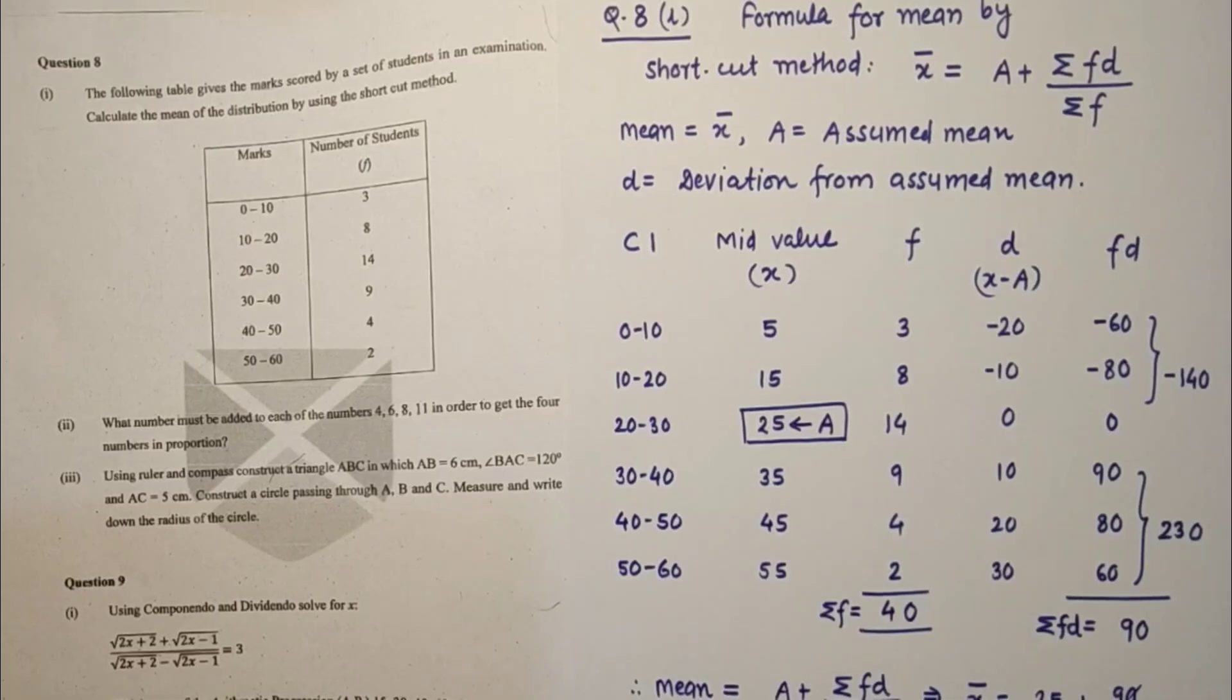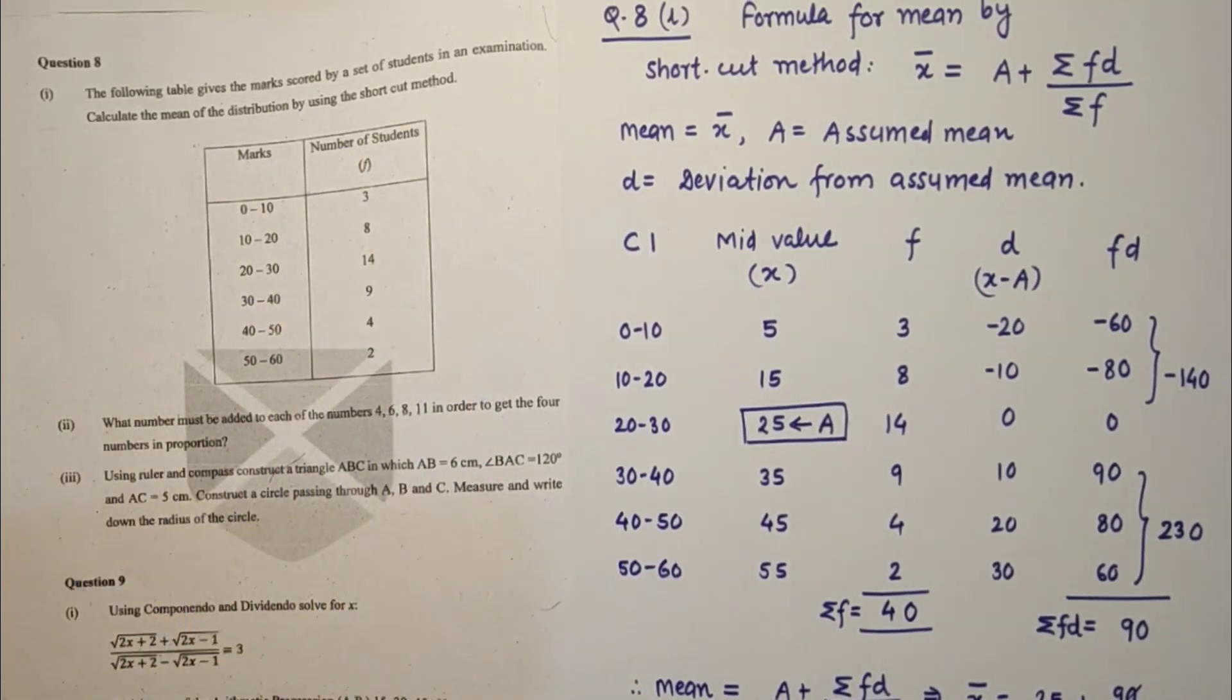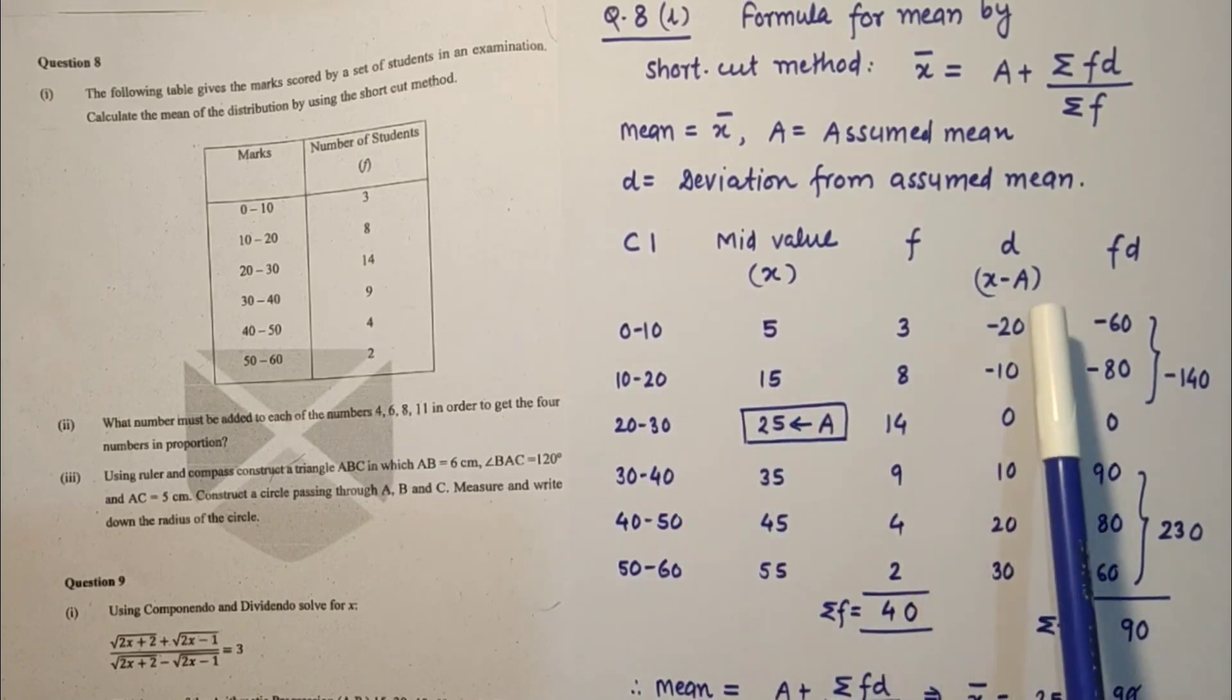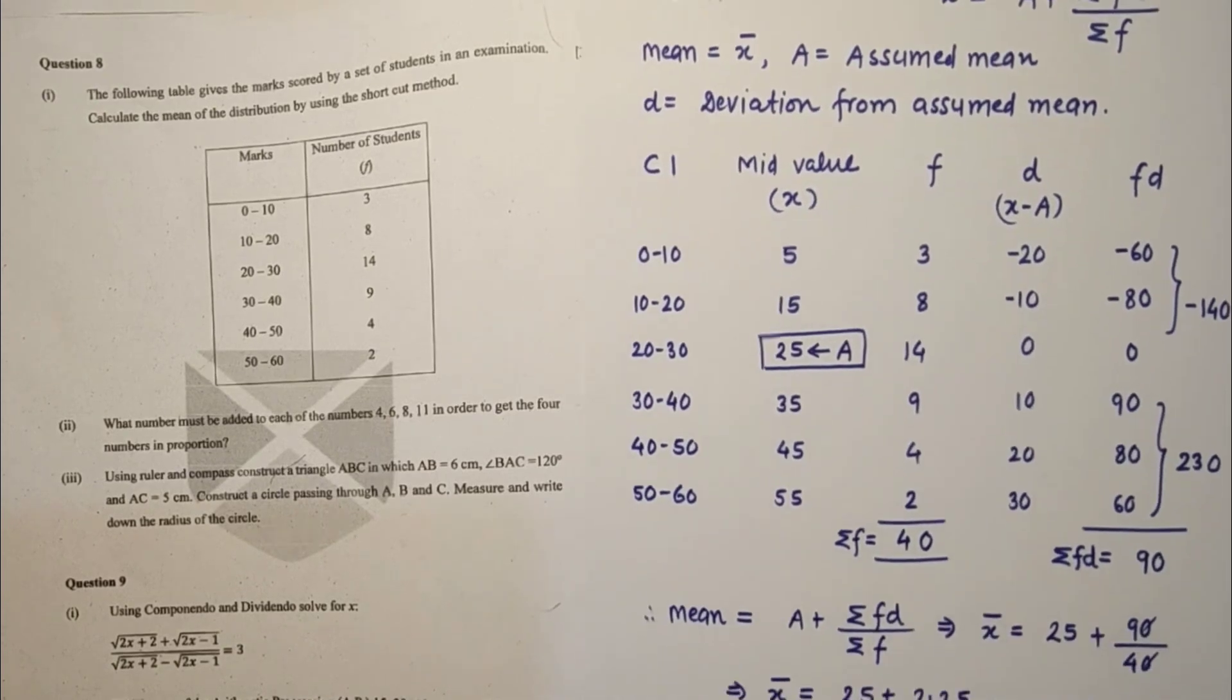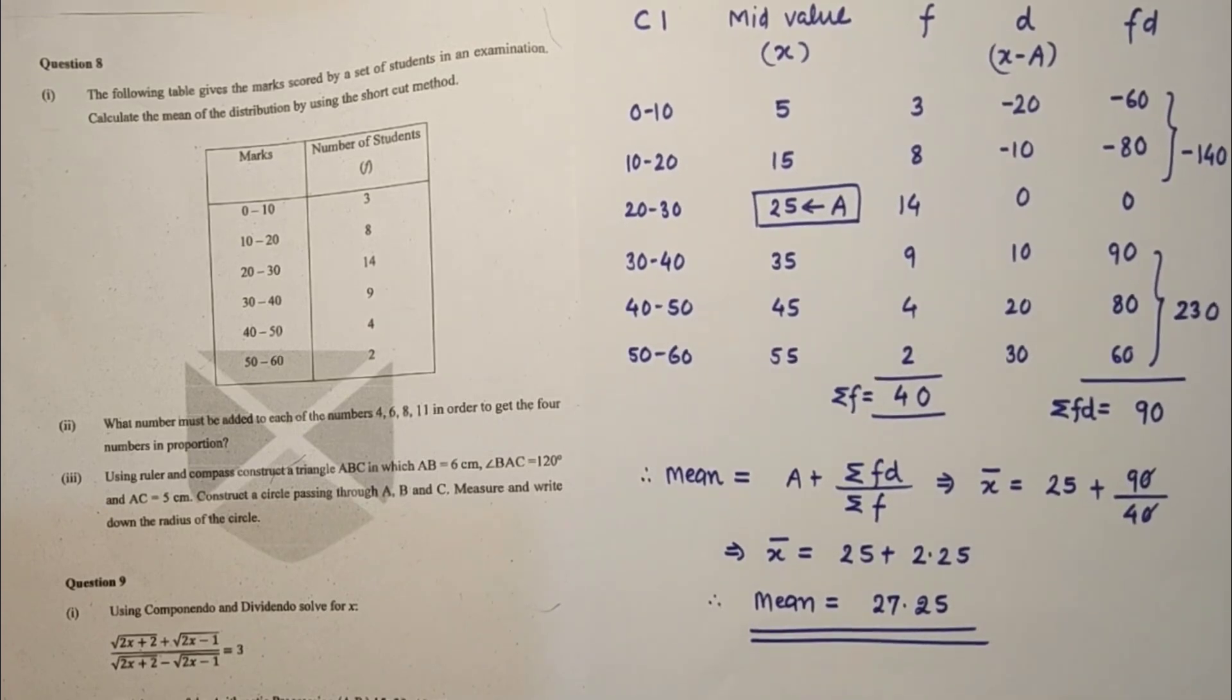Question number 8 first sub part. This is the data. We have to find using shortcut method the mean. So we did mid value, frequency, D the deviation from assumed mean, F into D. Summation F is 40, summation FD is 90. Using formula, mean is coming 27.25, that is the answer.